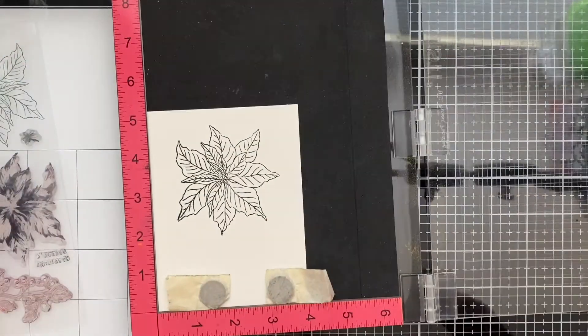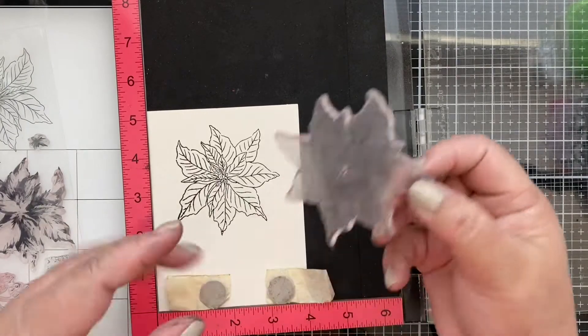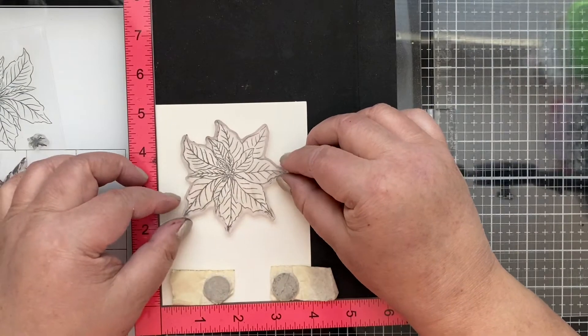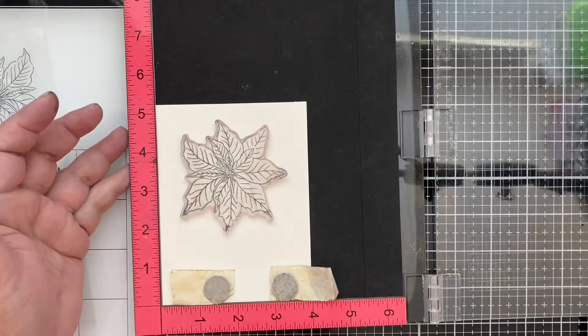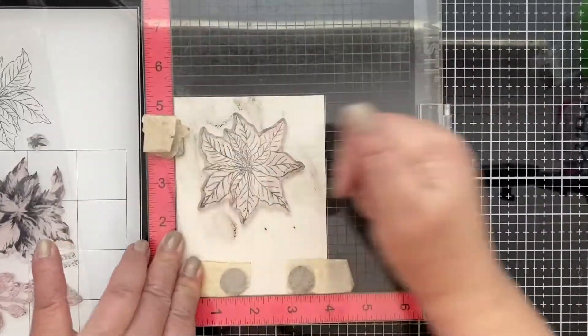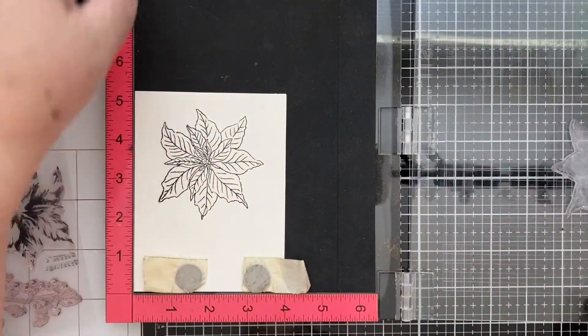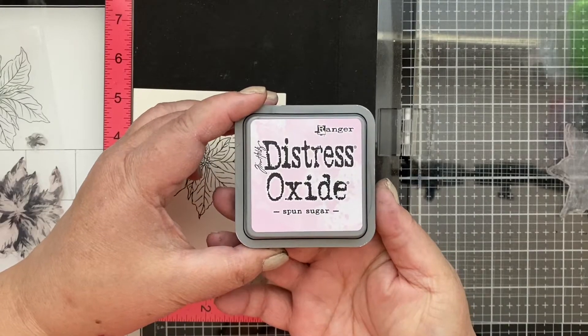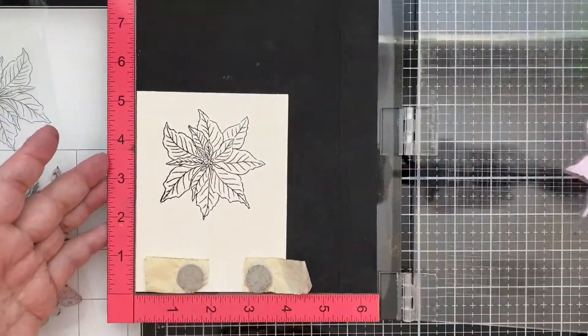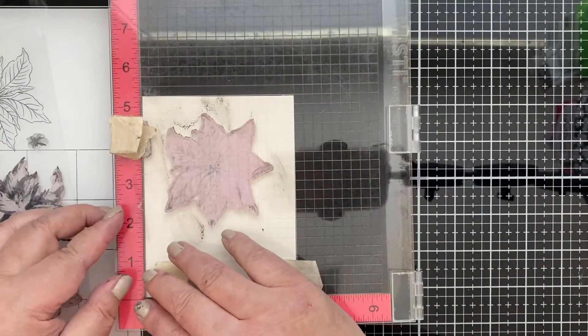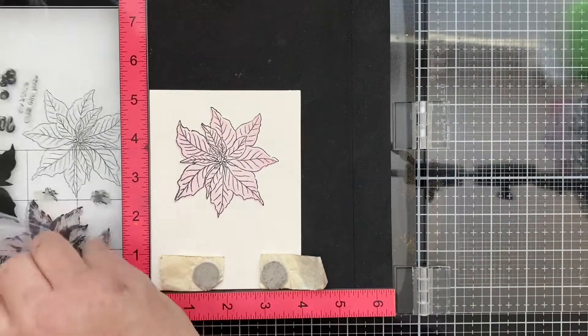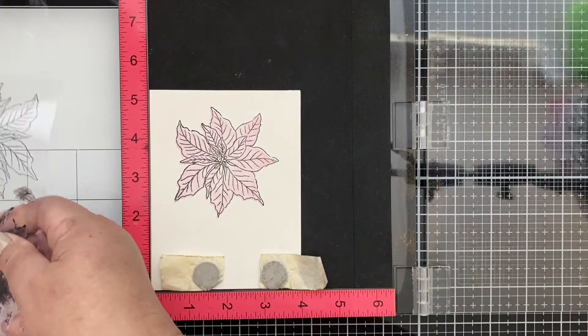There you go. The next stamp we're going to use is this stamp here, and this is the full stamp that should cover the whole of the poinsettia. Excuse my Misti guys, it's gotten dirty, I'll clean it up here after we finish this. We're going to use the distress oxide spun sugar for this stamp and let's stamp it. Love this pink color.